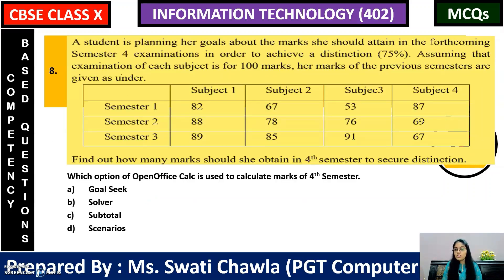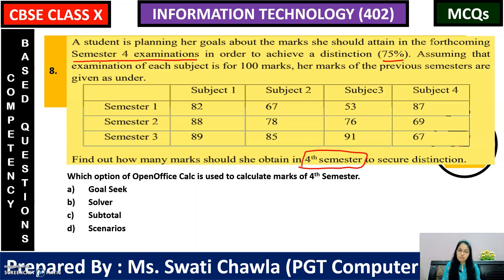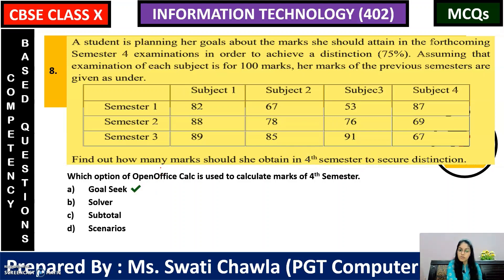Next: A student is planning her goals about marks she should attain in the forthcoming 4th semester examination to achieve a distinction of 75%. Her marks from previous semesters are given. Find out how many marks she should obtain in the 4th semester. Since there is only one unknown variable — one semester — the answer is option A, that is goal seek.